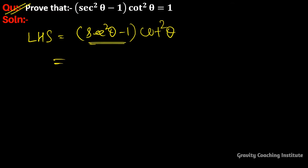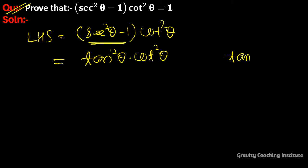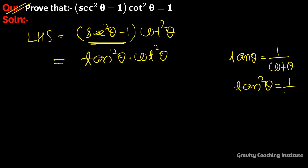sec²θ - 1 is equal to tan²θ, so LHS becomes tan²θ·cot²θ. We also know that tanθ = 1/cotθ, therefore tan²θ = 1/cot²θ.